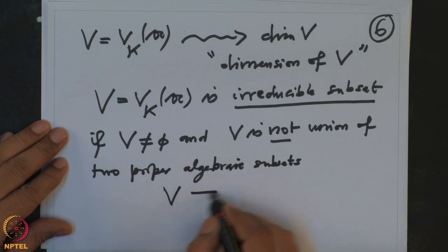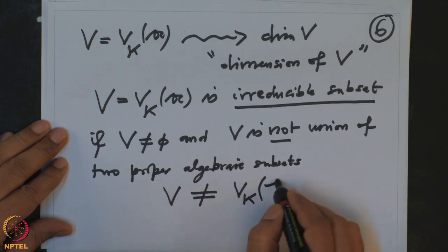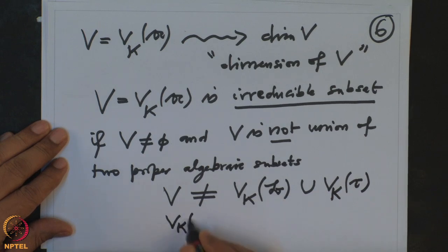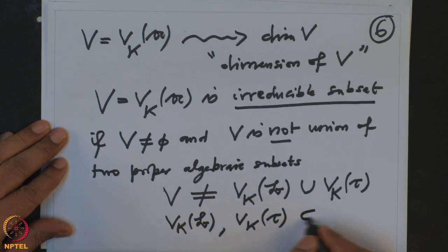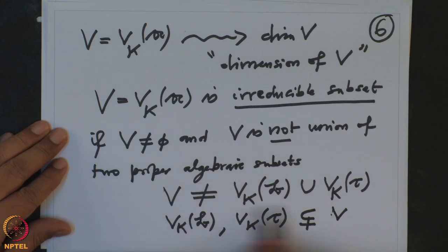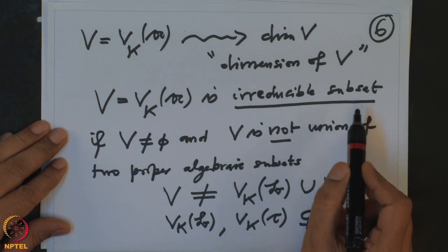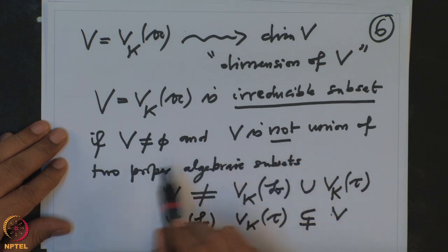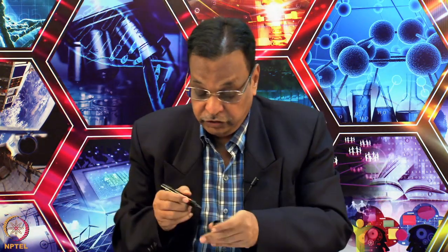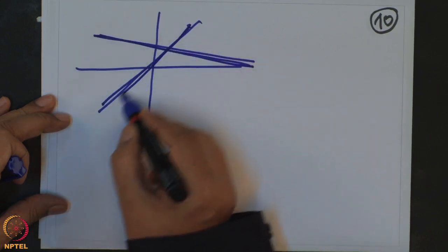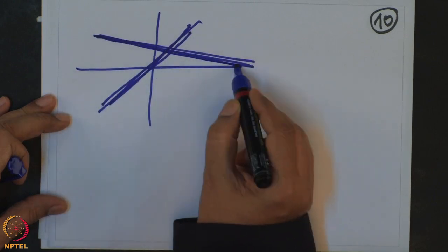More precisely, V is irreducible if it cannot equal V_K(B) ∪ V_K(C) where V_K(B) and V_K(C) are both properly contained in V. This concept is defined for arbitrary topological spaces: a subset is irreducible if it is non-empty and is not the union of two proper closed subsets. For example, the pair of two lines in the plane is clearly not irreducible, because it is the union of two proper closed sets.